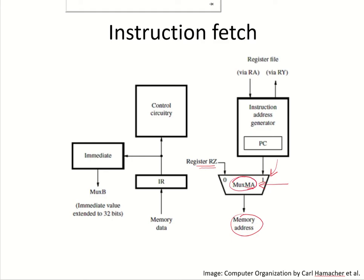So this memory address would either be the address from PC or some address which is coming from the interstage register RZ. When the instruction is fetched from the memory, it is placed in the instruction register. This comes via the data bus. The instruction register will hold the instruction for the complete decode-execute cycle because, based on that instruction, the control circuitry will generate appropriate control signals. Also, from the bits of the instruction register, if there is any immediate value available, that will be extracted and sent to the multiplexer B of the data path.